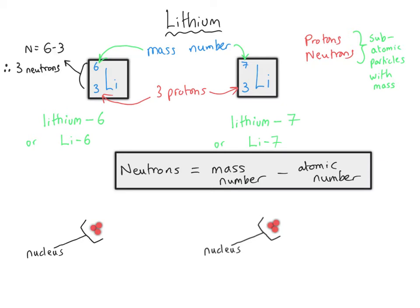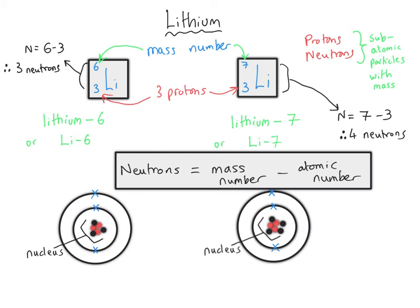So six take away three is three neutrons, and for lithium-7 on the right-hand side, we can do the same calculation, only this time it's seven take away three, which gives us four neutrons. Both of these atoms are lithium, because they have got three protons in their nucleus, and since they are both neutral atoms, they will also have three electrons in their shells as well. They'll behave the same chemically, because they've got the same electrons, and the only difference is the number of neutrons that they have in their nucleus. The word isotope actually comes from Greek — the iso part means equal, and the tope means place.